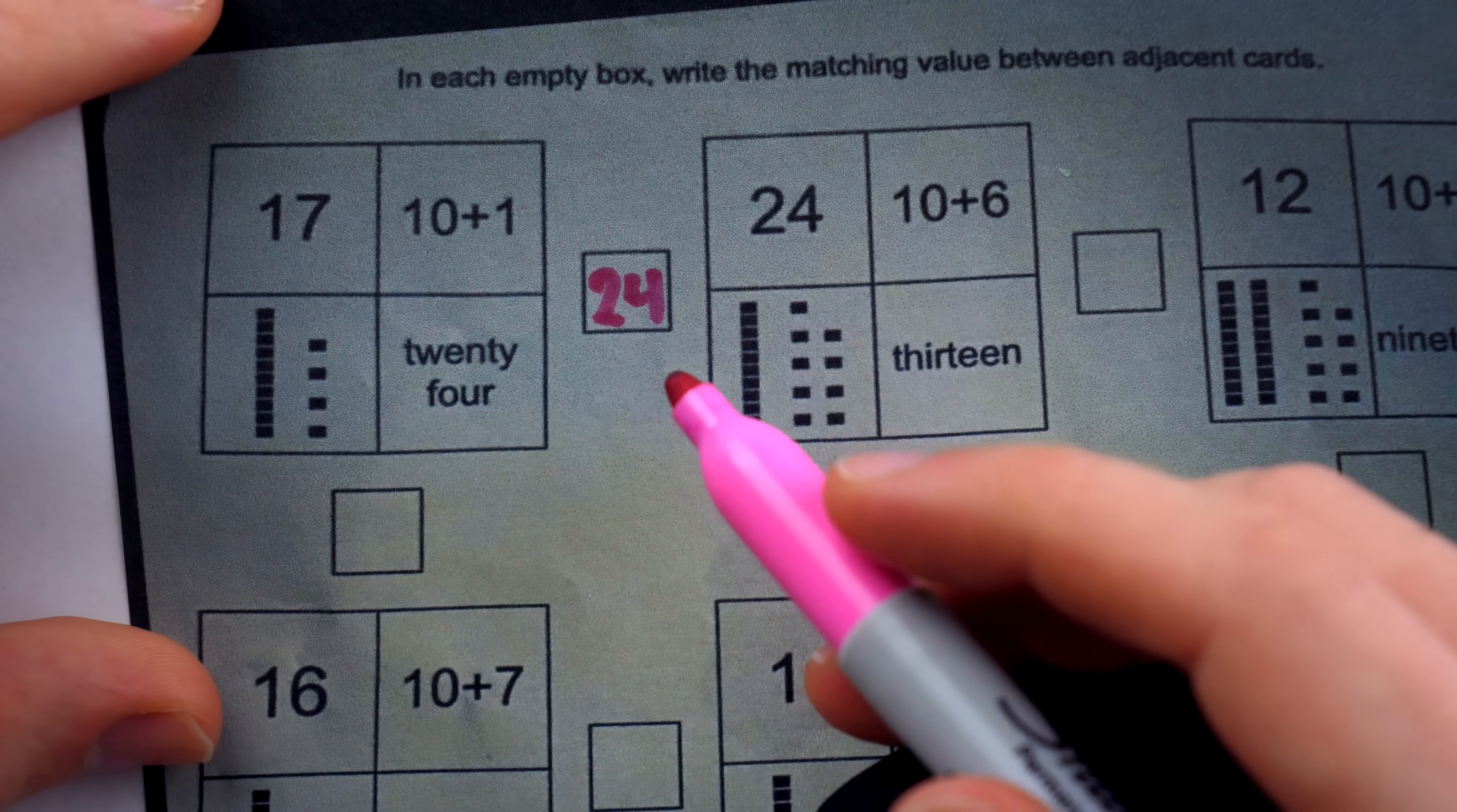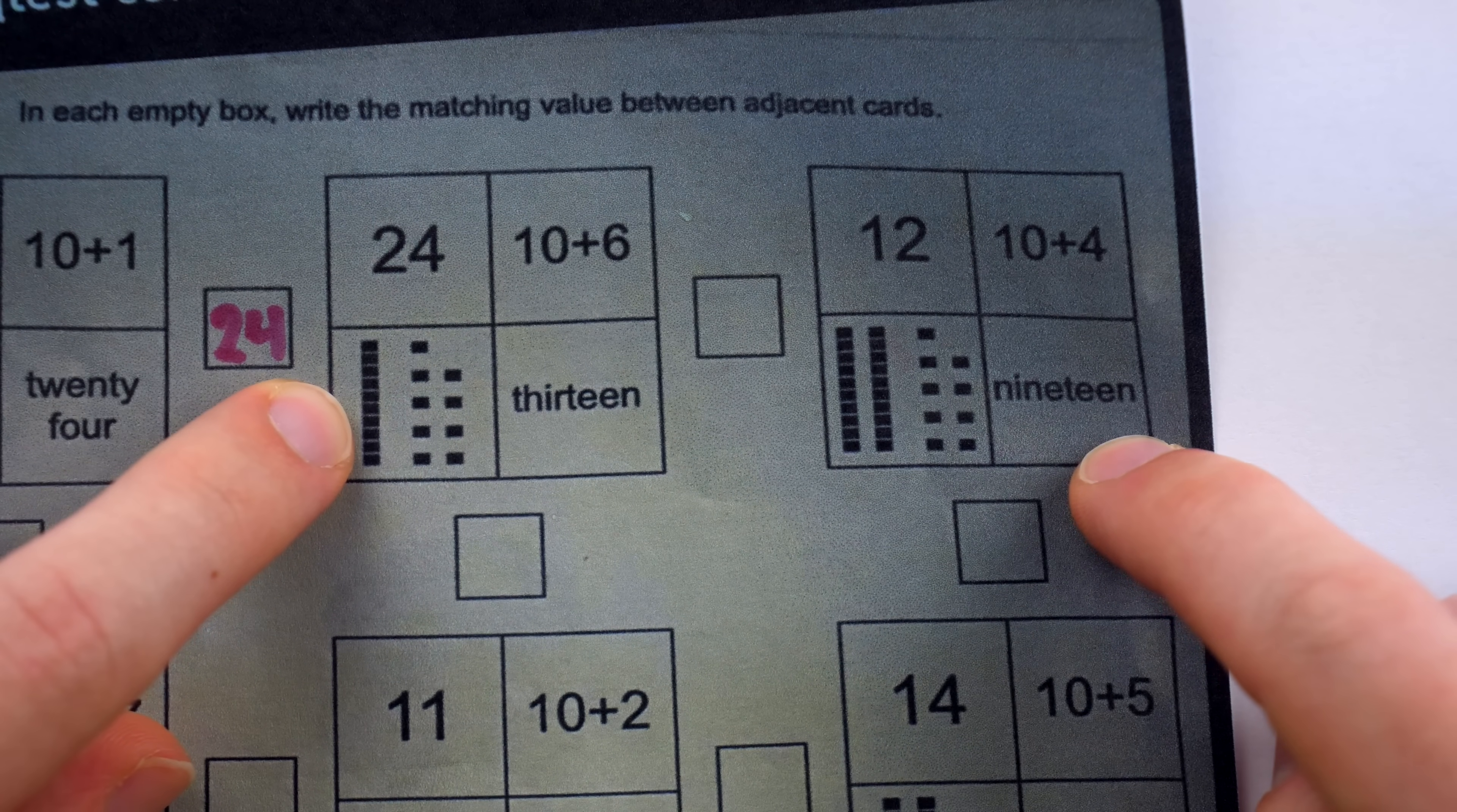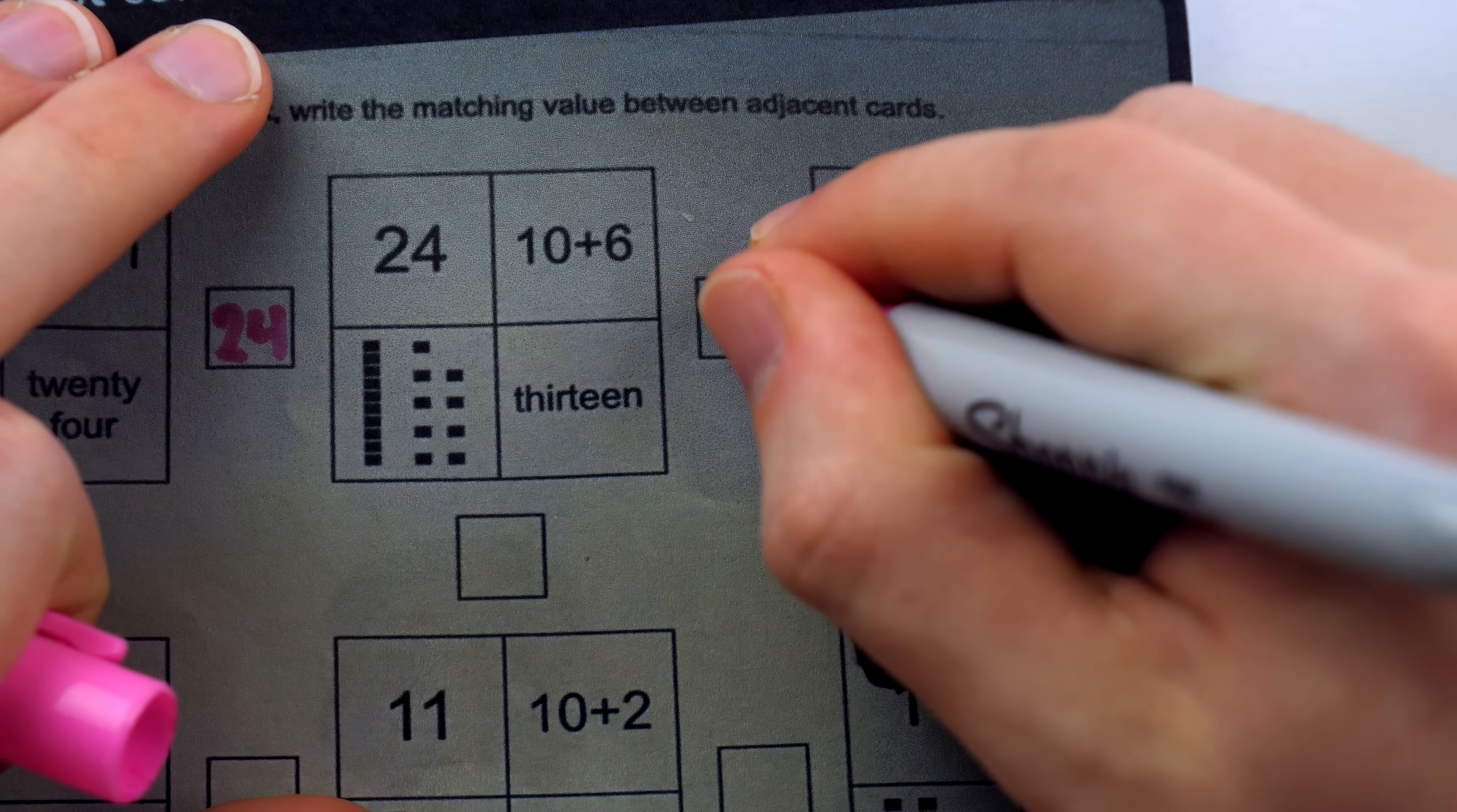These two boxes have a number in common. What number? 24. Moving to the right, what number do these two boxes have in common? This one has a 19, and this one you can see also has a 19. It has one stick of 10, and then nine individual blocks here. So that's 19. So 19 is the number shared by those two blocks.